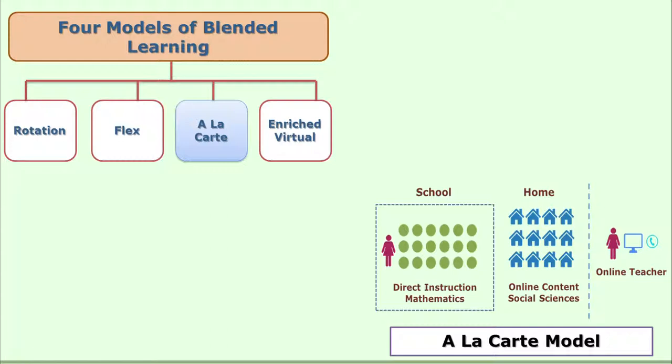The third type is the a la carte model of blended learning. In this model, learner autonomy is to a greater extent. The learner decides which part of the syllabus to learn through online mode and which part through face-to-face mode. For example, a student may choose to learn history through online mode while attending math and science classes in face-to-face mode. Learner autonomy in choosing the mode is very clearly emphasized in the a la carte model.